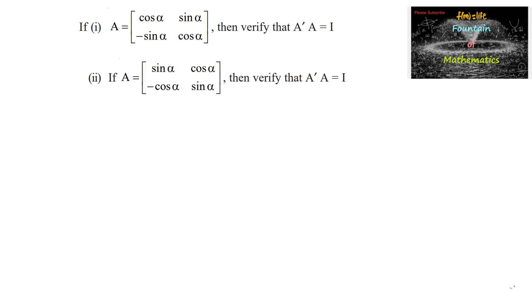If A is equal to cos alpha, sin alpha, minus sin alpha and cos alpha, then verify that A dash into A, that is A transpose into A, is equal to an identity matrix.